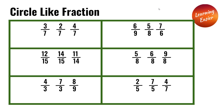Next is 12 over 15, 14 over 15, and 11 over 14. They are an unlike fraction even if the first two have the same denominator. The last one, which is 11 over 14, has a different denominator than the other two.